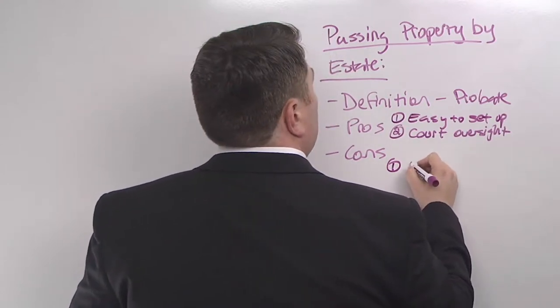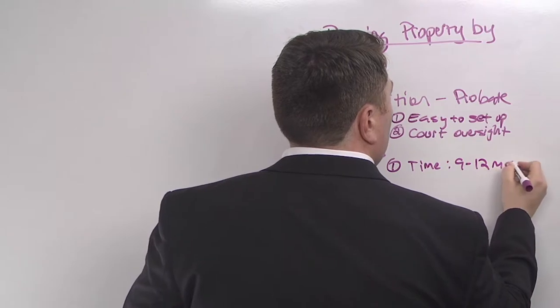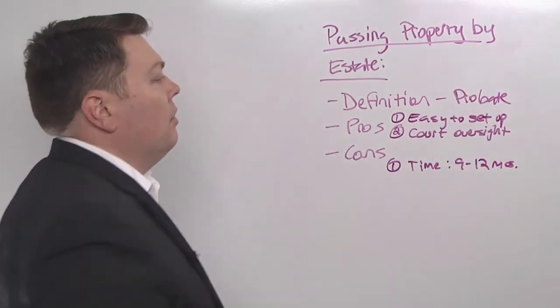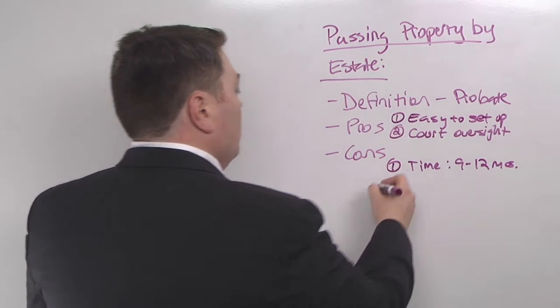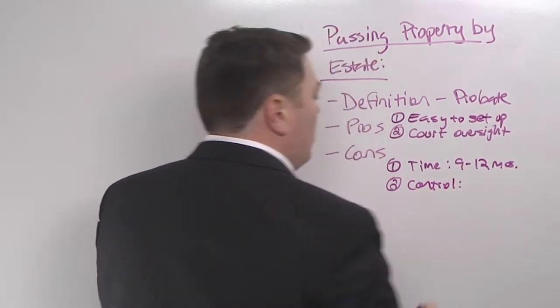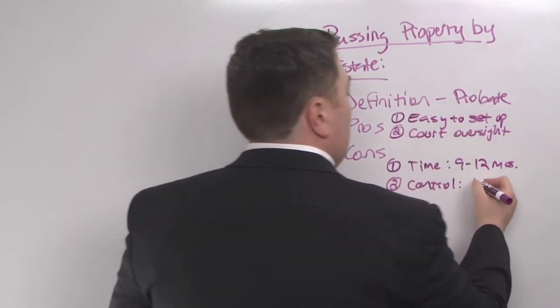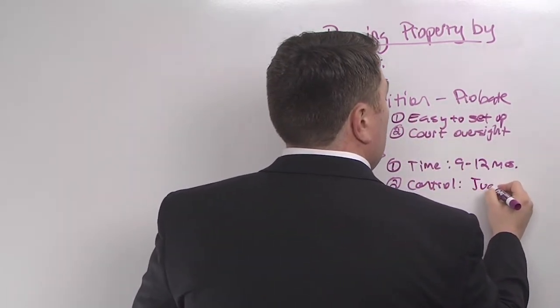First, it's time-consuming. It takes between nine and twelve months to pass property through a full formal probate. Also, you lose control. Because who's ultimately in charge of what happens in that probate process? The person who's in charge is the judge.